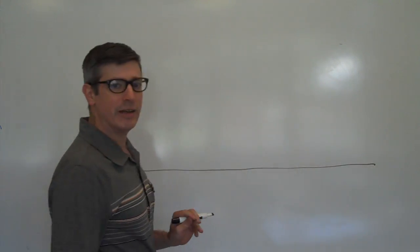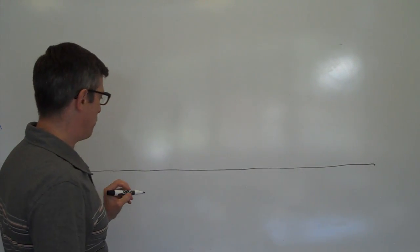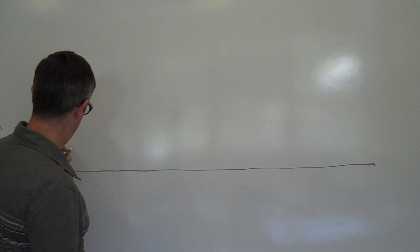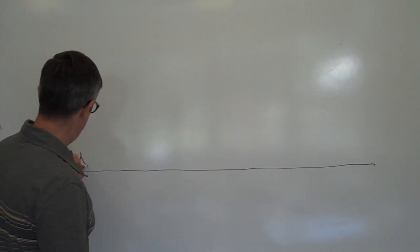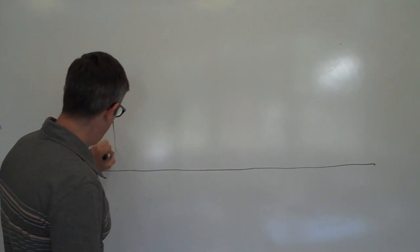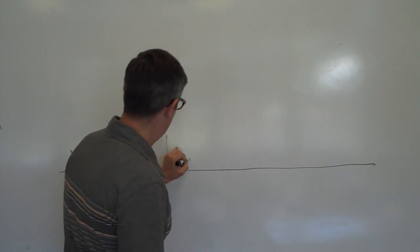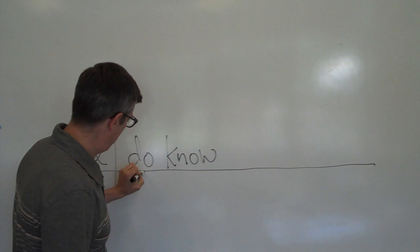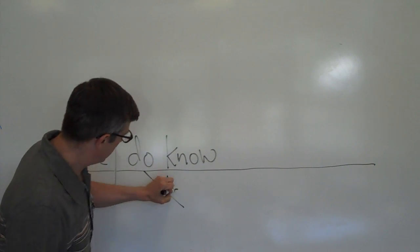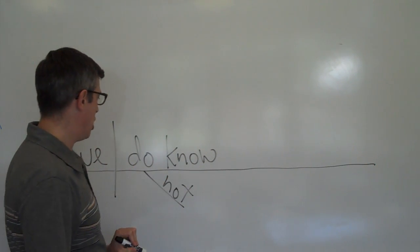So let's have a baseline here. Okay, let's do the things we can do easily. The subject is we. The verb is do know, modified by the adverb not. We do not know.